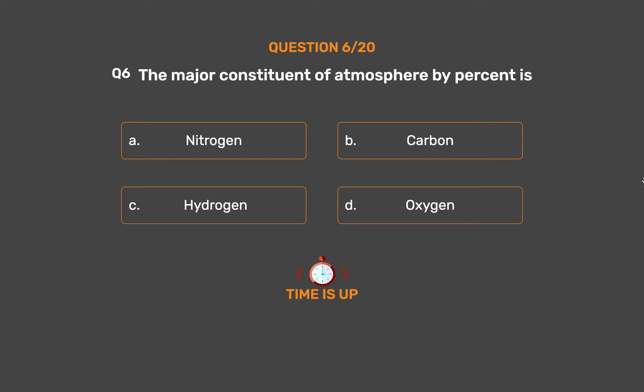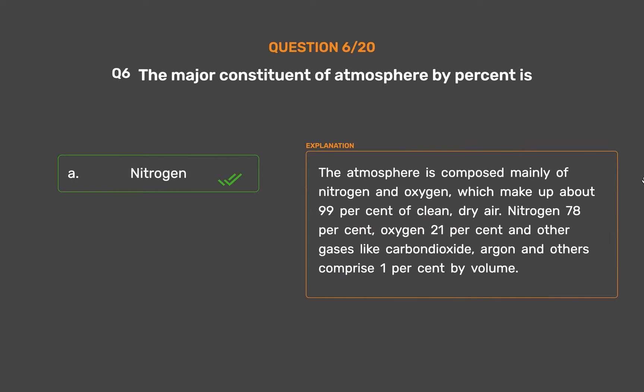The correct answer is Option A: Nitrogen. The atmosphere is composed mainly of nitrogen and oxygen, which make up about 99% of clean, dry air. Nitrogen 78%, oxygen 21%, and other gases like carbon dioxide, argon and others comprise 1% by volume.